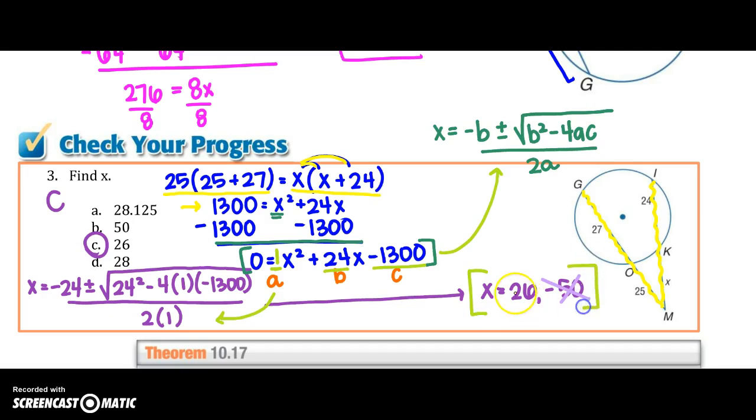my solutions are 26 and negative 50. Well, because I can't have a negative length, I'm going to make sure I don't use that one, so my answer becomes 26. Alright, stay tuned for our last portion of this video coming to you soon.